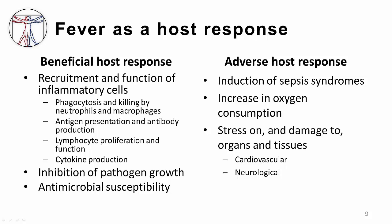Endogenous pyrogens can also decrease the levels of some trace metals — for example iron and zinc — that many bacteria require for growth. An elevated temperature may also more directly impair microorganisms, including effects on growth, motility, and on capsule and cell wall formation. Therefore, antimicrobial susceptibility may increase at higher temperatures.